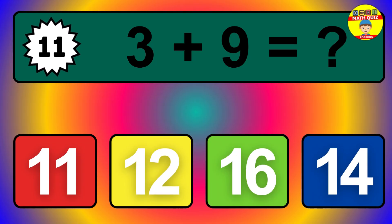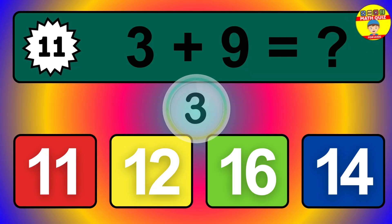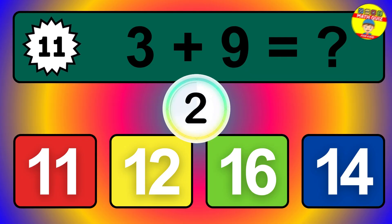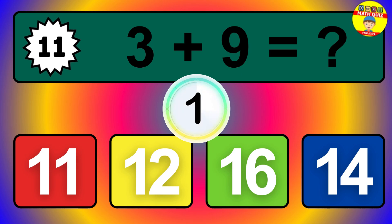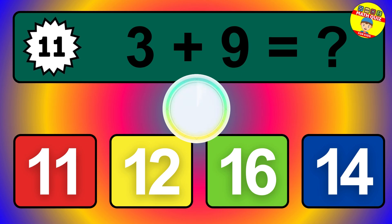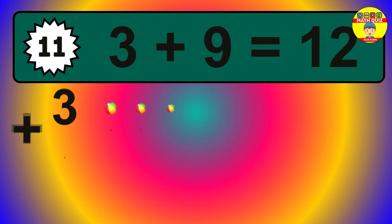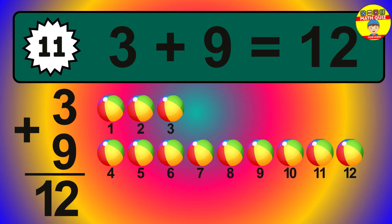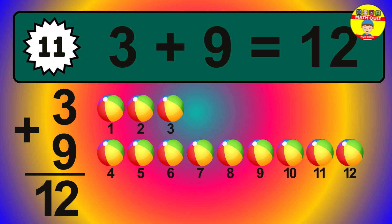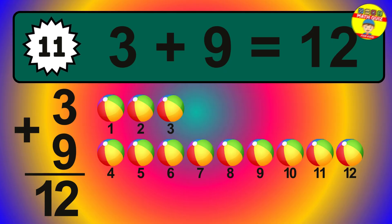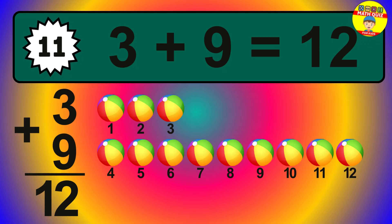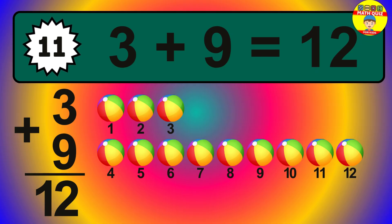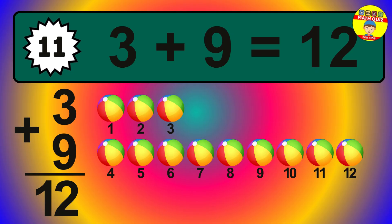Question 11. 3 plus 9 equals what? So the answer is 3 plus 9 is 12. Let's count it: 1, 2, 3, 4, 5, 6, 7, 8, 9, 10, 11, 12.